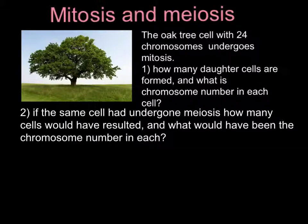In this video I want to explain the difference between mitosis and meiosis. As an example I will use the oak tree that has 24 chromosomes. Today there are going to be two questions. You may stop the video here, read the questions, answer them, and then compare with my explanation. The first question is: how many daughter cells are formed and what is the chromosome number in each cell?